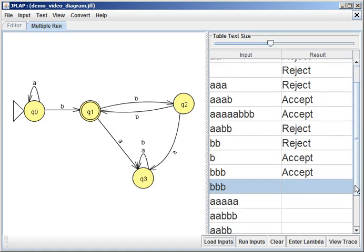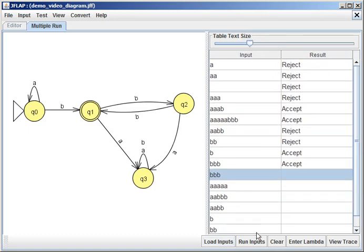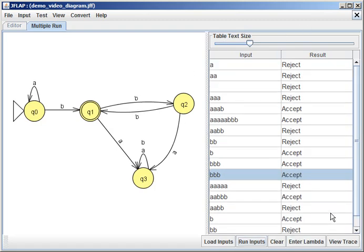So you can see it just stuffed the new ones underneath here and I can reduce the text size so I could see them all and I can run inputs and it just tells me what happens, rejected or accepted by the machine.